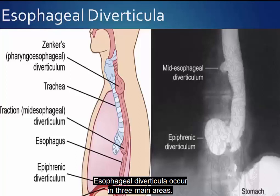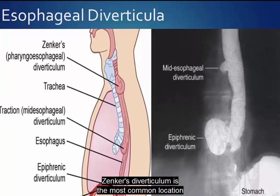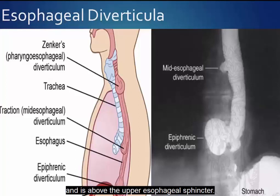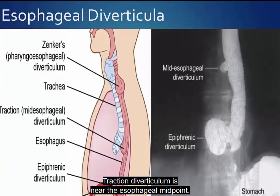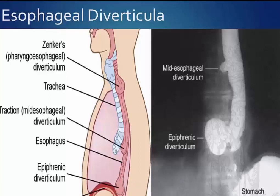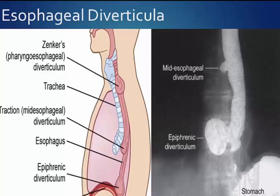Esophageal diverticula occur in three main areas. Zenker's diverticulum is the most common location and is above the upper esophageal sphincter. Traction diverticulum is near the esophageal midpoint. An epiphrenic diverticulum is above the lower esophageal sphincter.